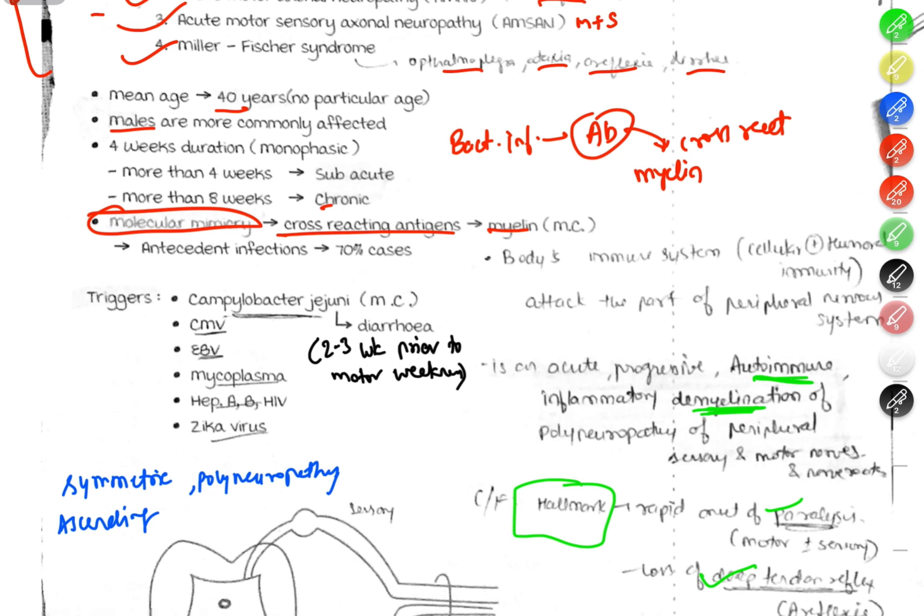Campylobacter jejuni enterocolitis is the most common precipitating organism. Viral causes include cytomegalovirus, Epstein-Barr virus, mycoplasma, hepatitis A and B, HIV, and Zika virus. These are the main triggers. Most common is Campylobacter jejuni.